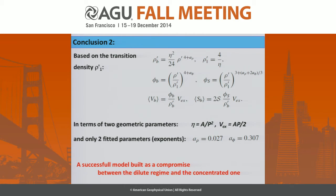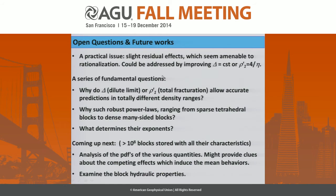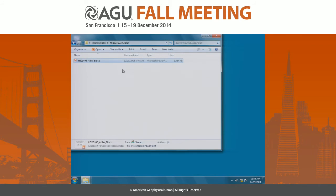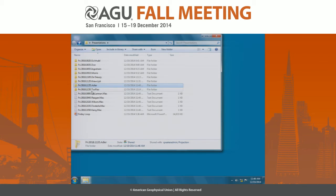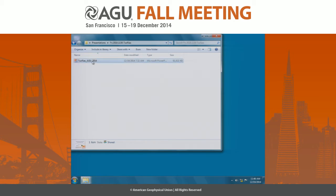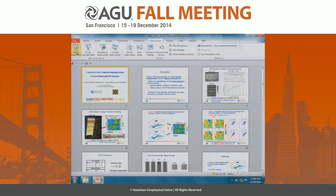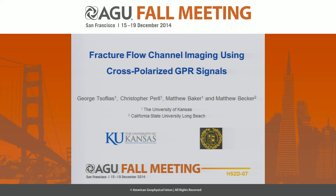We could actually play a similar game with convex bodies. Suppose we use flat oblate ellipsoids — like discs — with some thickness. Then many of these properties could be transposed to that case, and in that case we would have a finite aperture. Here the aperture is zero.